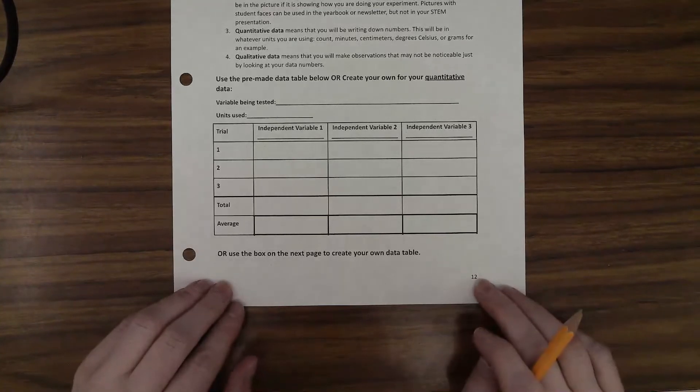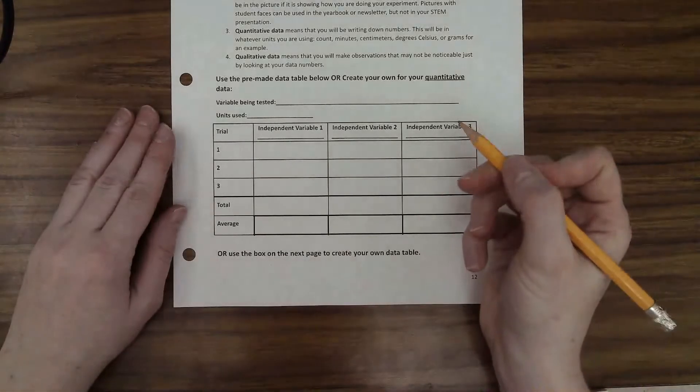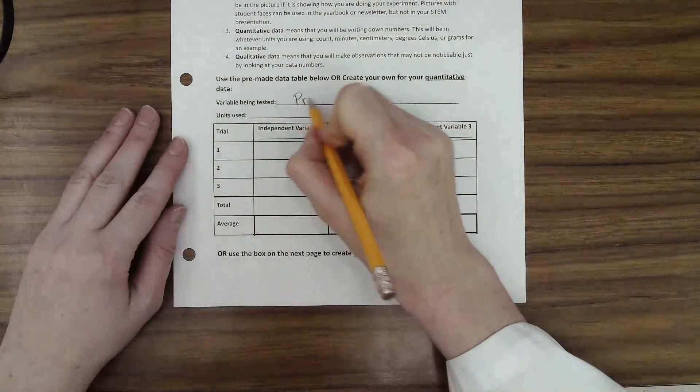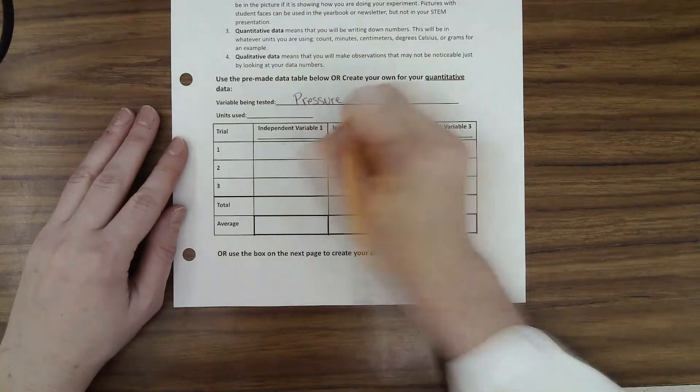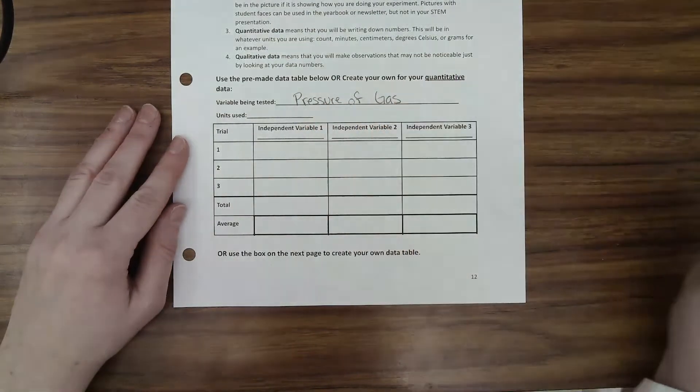I'm going to fill this out on page 12 in my STEM fair notebook. I'm going to be testing the pressure of the gas. That's the thing I'm going to be measuring. So I'm going to measure the pressure of the gas. Make sure that that's on your table.